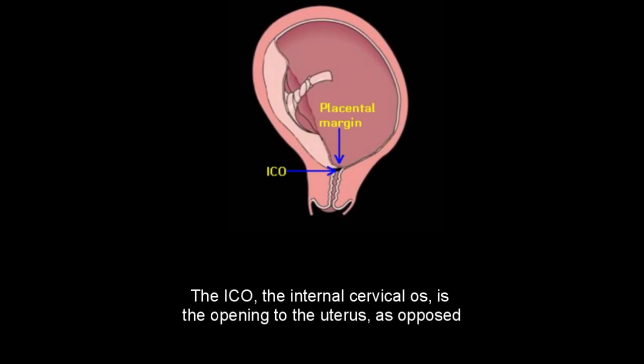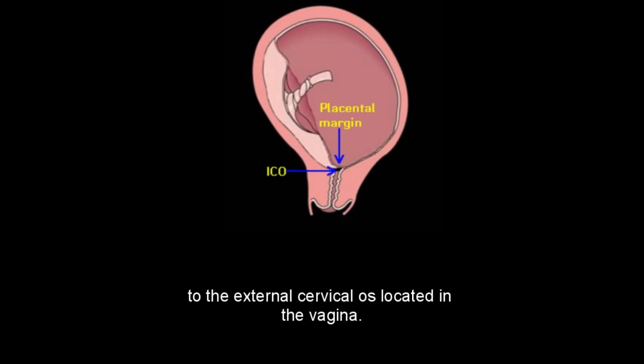The ICO, the internal cervical os, is the opening to the uterus, as opposed to the external cervical os, which is located in the vagina.